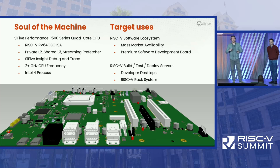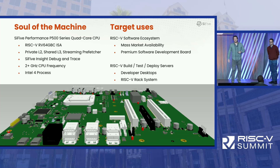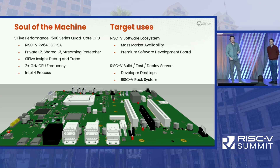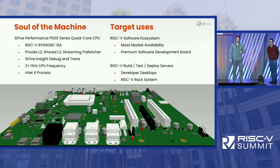Starting with the CPU, we have the SiFive Performance P500 Series Quad-Core CPU. This is an RV64GBC ISA with SiFive Insight Debug and Trace, a private L2 cache, and a shared L3 with a streaming prefetcher. We're expecting this to come in at over 2 gigahertz, which is going to push RISC-V software development to much higher levels.